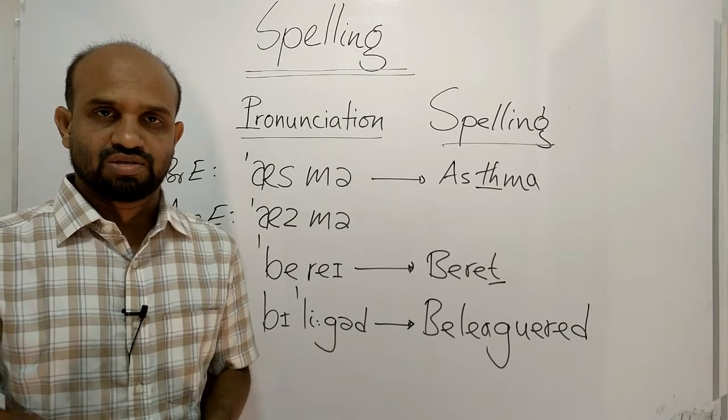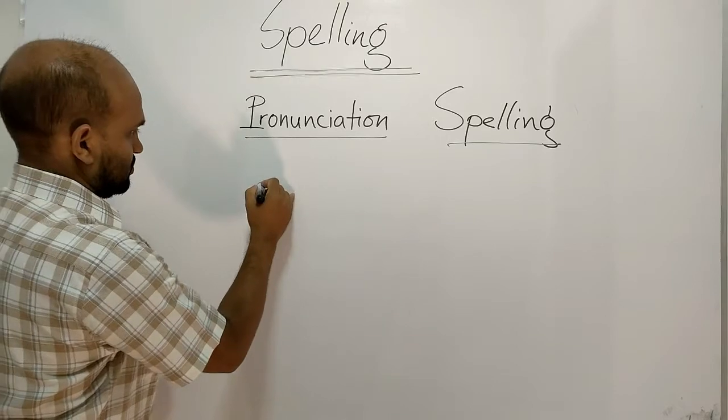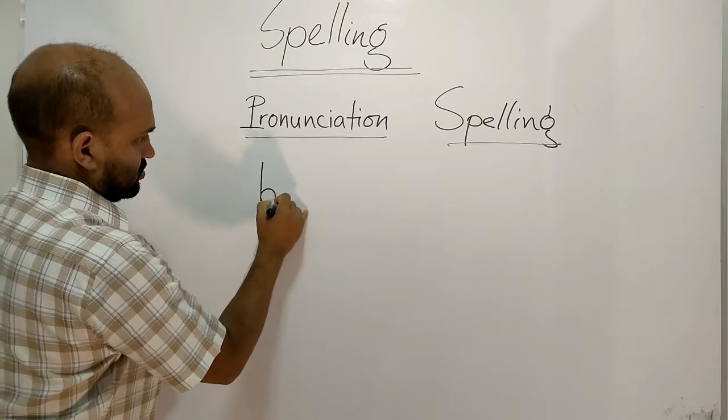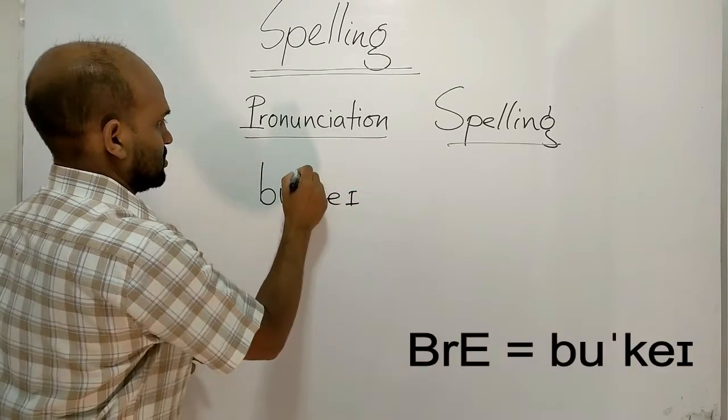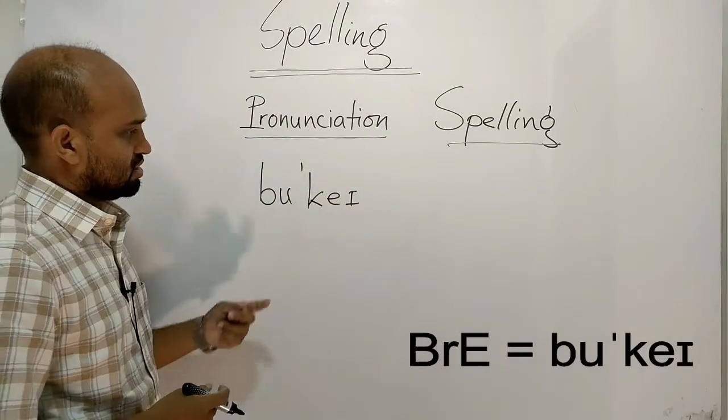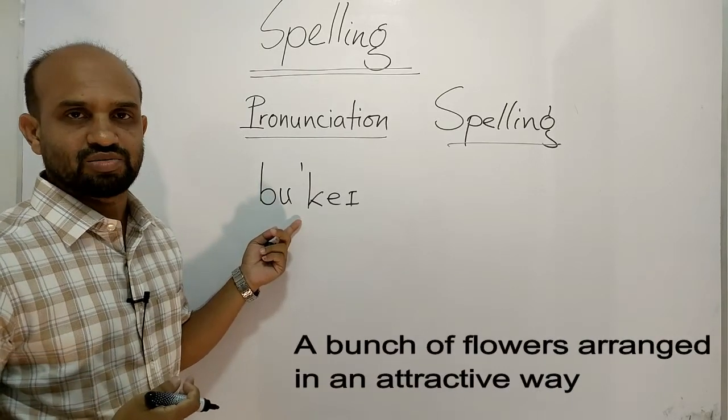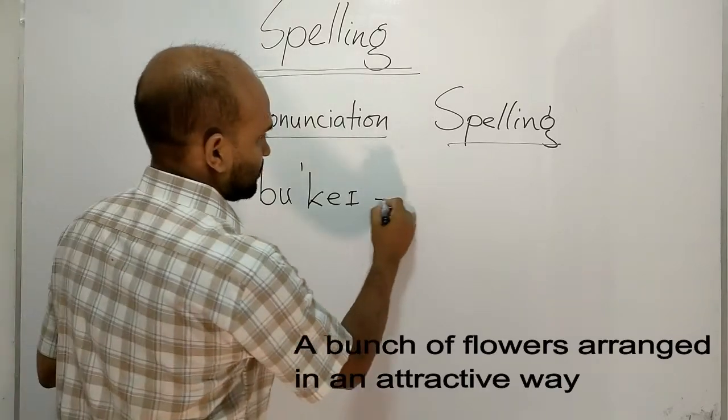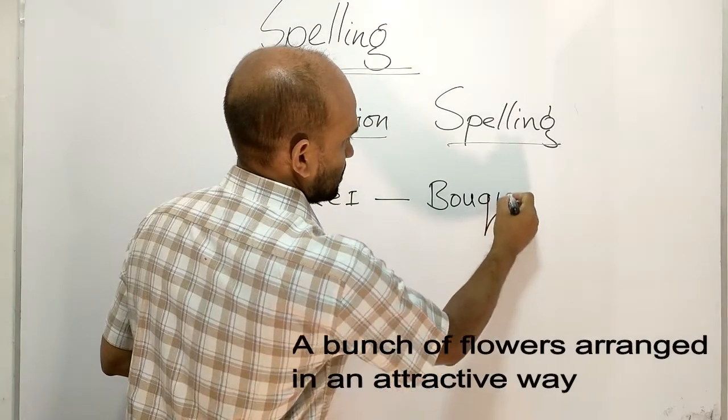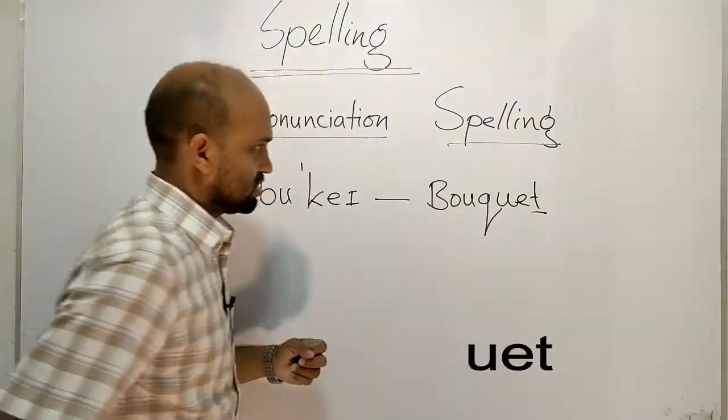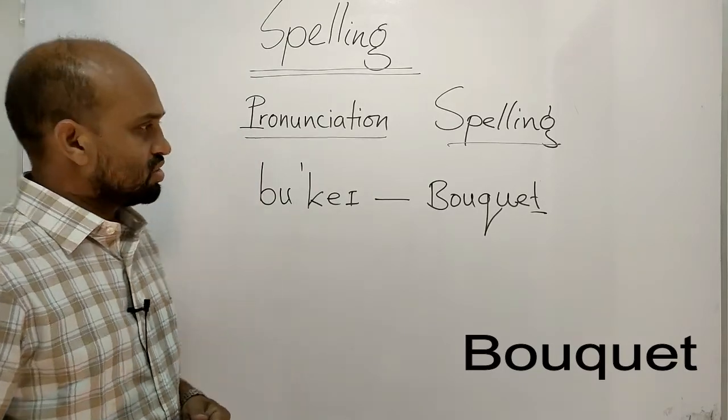Let's say some more words. The pronunciation of the next word is bouquet. The meaning is a bunch of flowers arranged in an attractive way. The spelling is B-O-U-Q-U-E-T. Here this T remains silent.